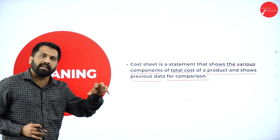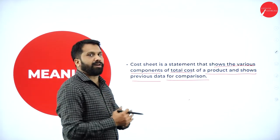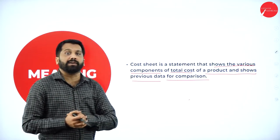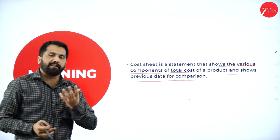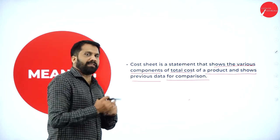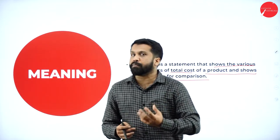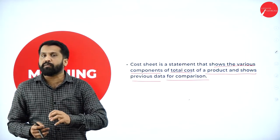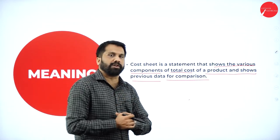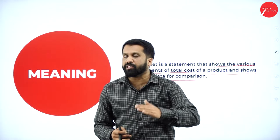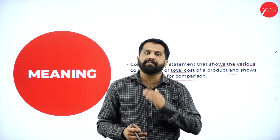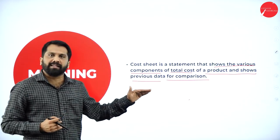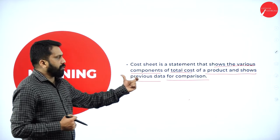There are costs like prime cost (your direct cost). Once done with prime cost, we find out work cost — that is factory cost. Once done with factory cost, we go to cost of production. Once done with cost of production, then cost of sales. Once done with cost of sales, we find total cost plus profit, and finally we arrive at sales. These are the procedures we'll follow step by step.